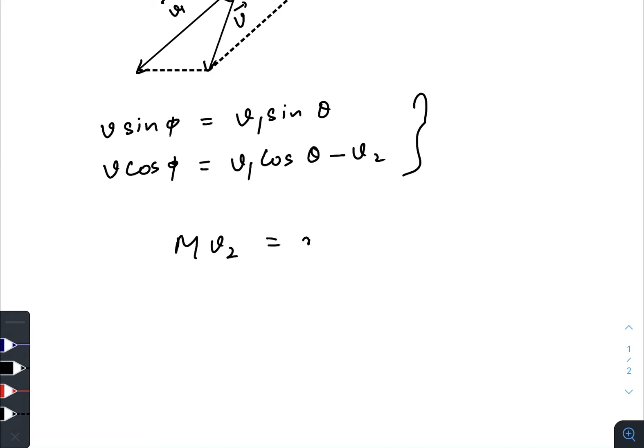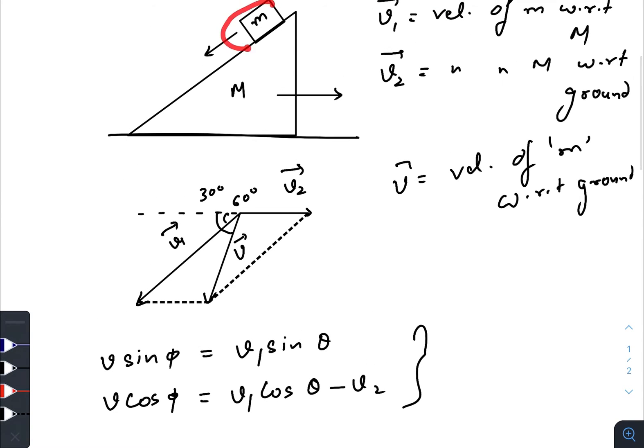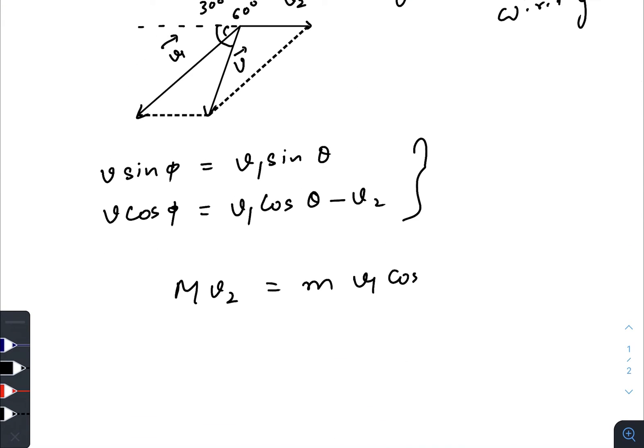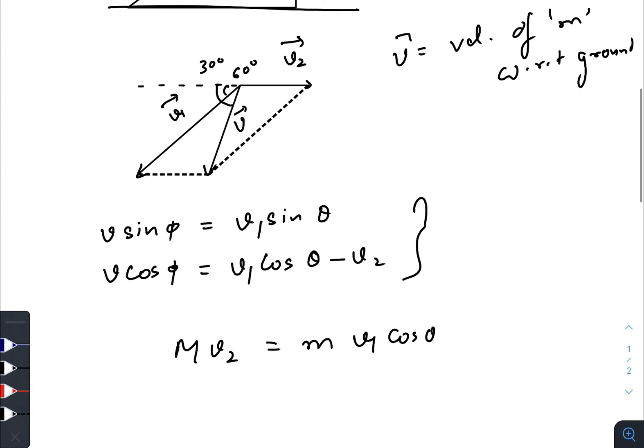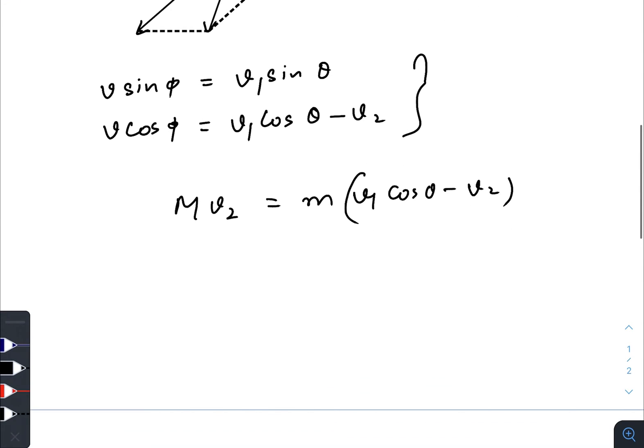So you can write that capital M times v2 equals small m times velocity of small m with respect to ground, that would be v1 cos theta minus v2. Now you can just work on these three equations and find out the ratio of small m and capital M.